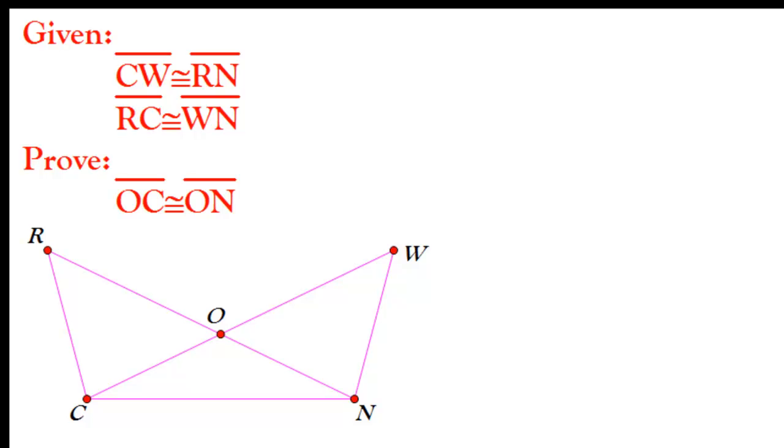We're given that segment CW is congruent to segment RN, and that segment RC is congruent to segment WN. Our goal here is to prove that segment OC is congruent to segment ON.